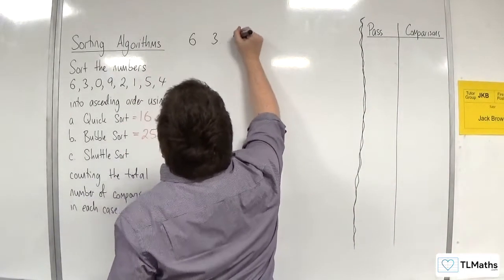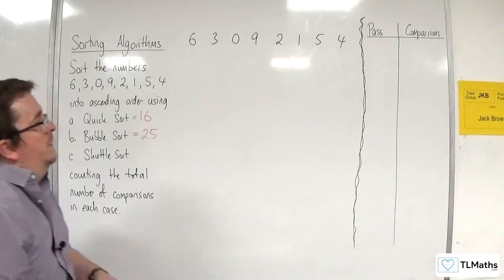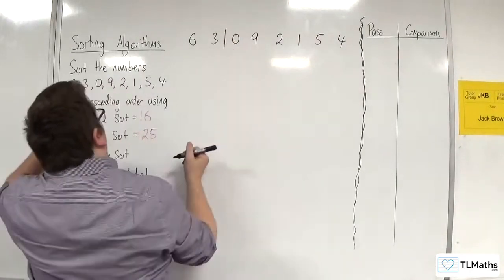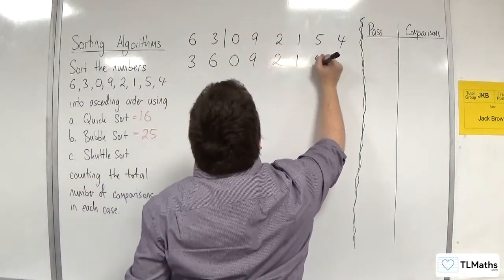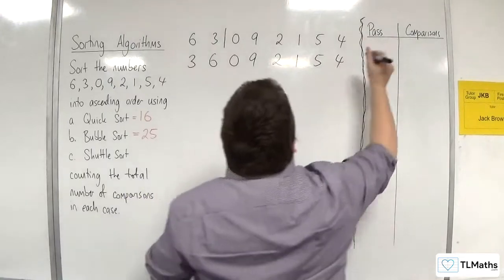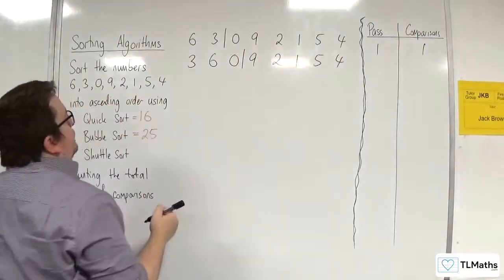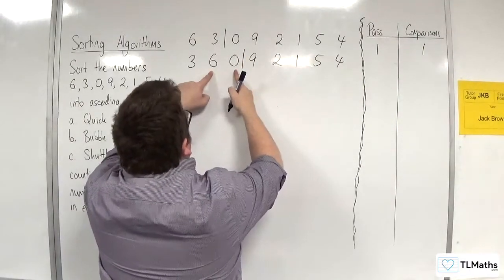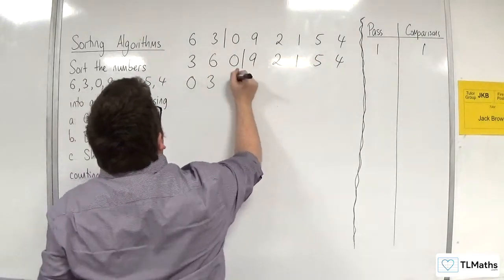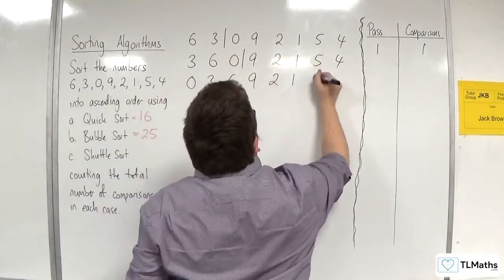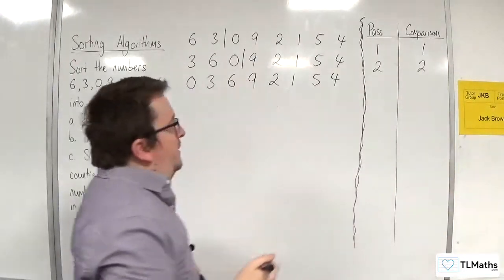So 6, 3, 0, 9, 2, 1, 5, 4 — now using the shuttle sort. First, we compare 6 and 3 and they need to be swapped: 3, 6, 0, 9, 2, 1, 5, 4. In the first pass, we made 1 comparison. Then we bring in 0. 0 gets compared with 6 and they swap, then 0 gets compared with 3 and they swap, giving 0, 3, 6, 9, 2, 1, 5, 4. So we made 2 comparisons in the second pass.